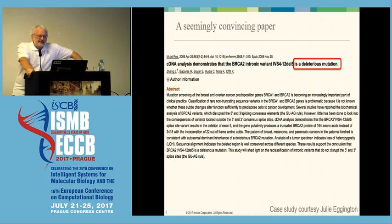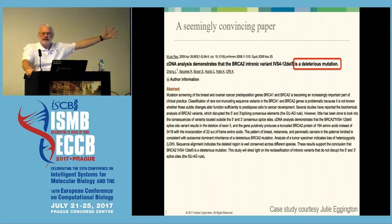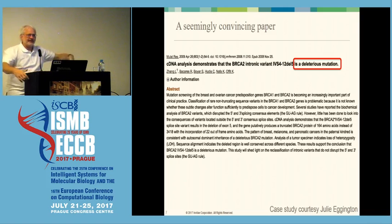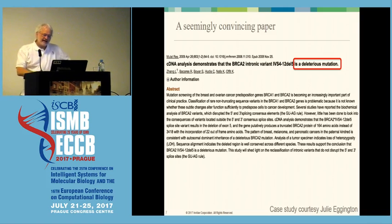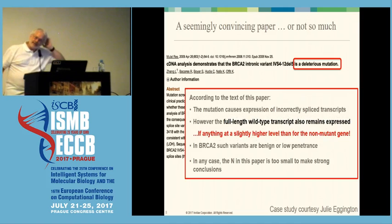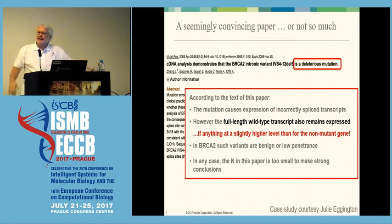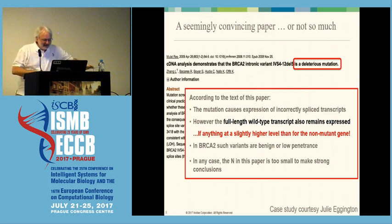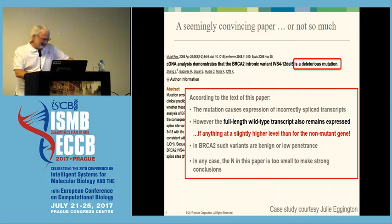I'll give you a good example of why this is hard. This paper here seems pretty convincing from the title — it says this variant is a deleterious mutation. But if you actually read the details of the paper, it actually argues exactly the opposite. We've contacted the authors about this paper. They don't particularly want to retract it — I don't know why.